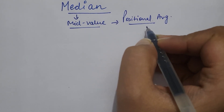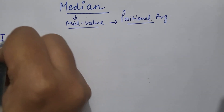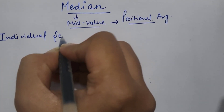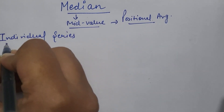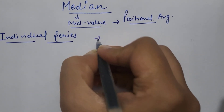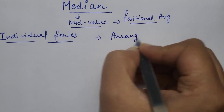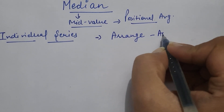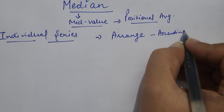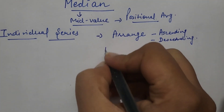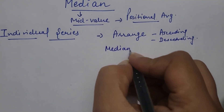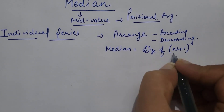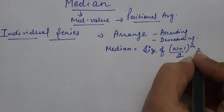Now how to calculate median? First of all, in individual series. To calculate median in individual series, we first need to arrange the series in ascending or descending order. After that, median can be calculated by applying this formula: size of N plus 1 by 2th item.